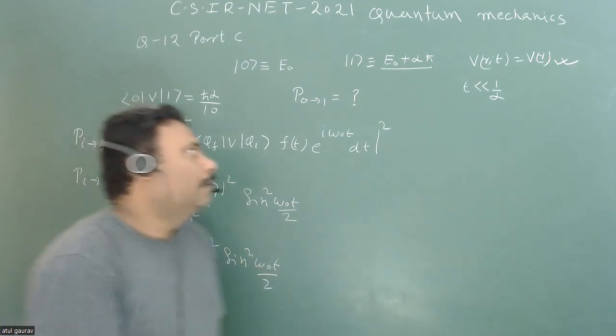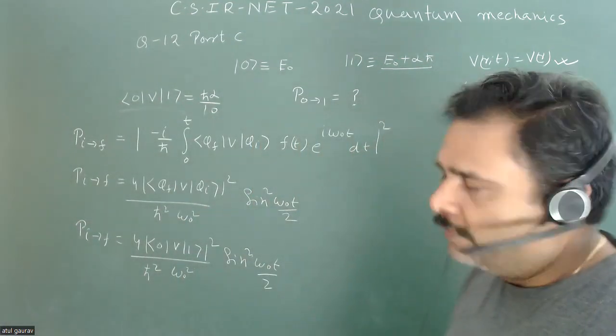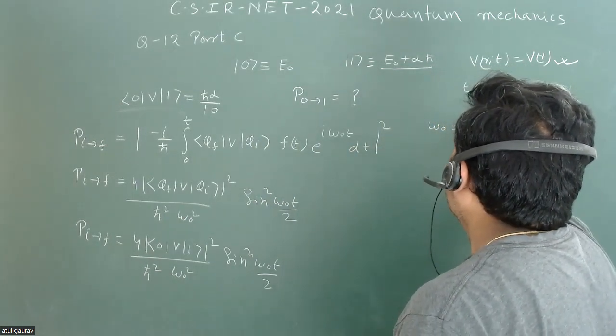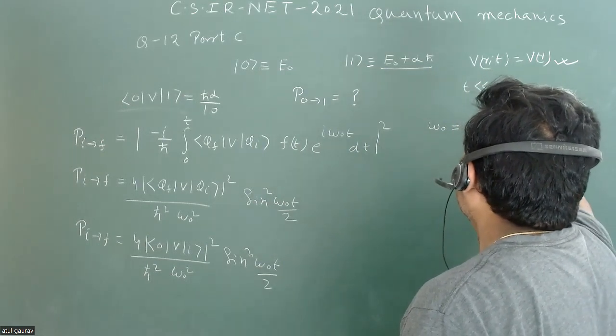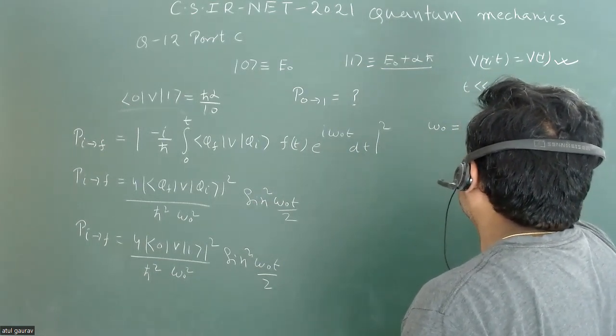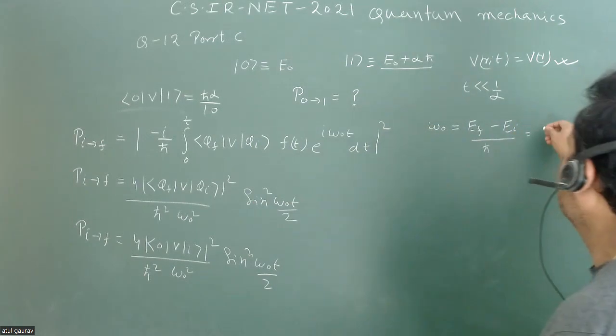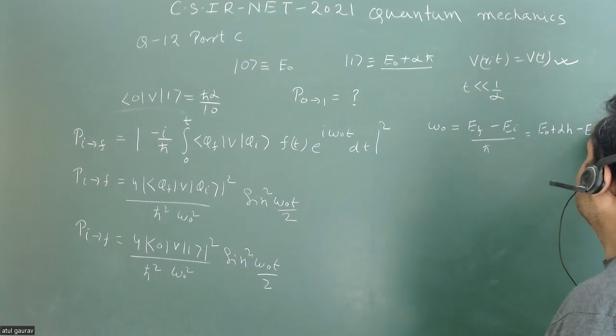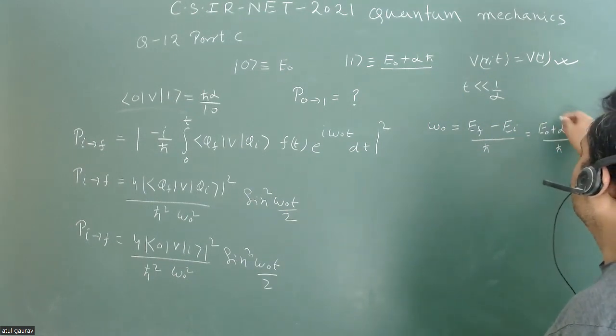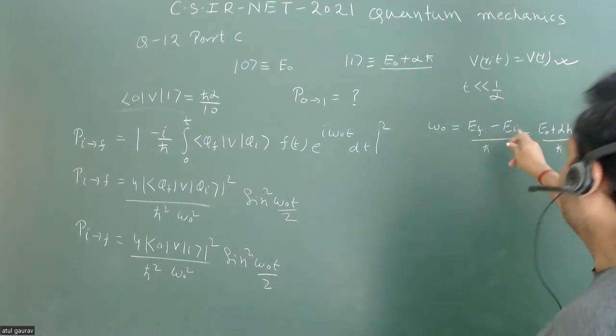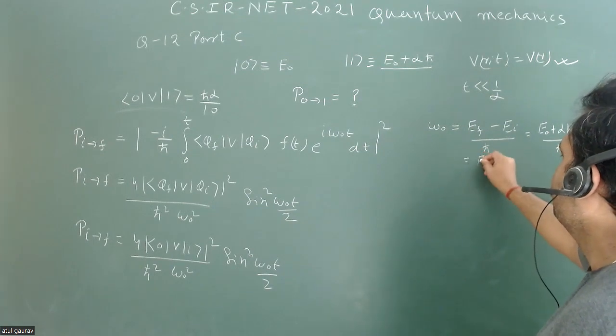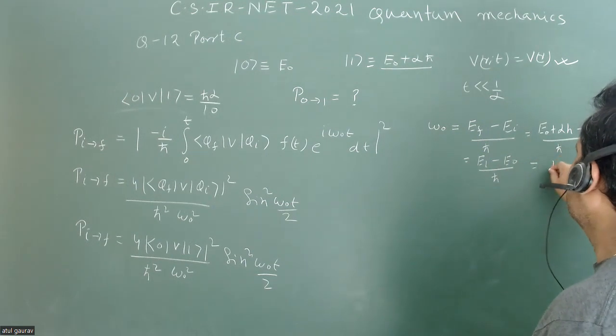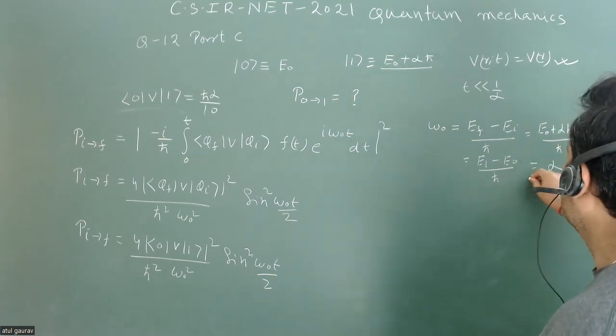Now we have to calculate the value of ω₀. The ω₀ is (E_f - E_i)/ℏ. Here we have this value is (E₀ + αℏ - E₀)/ℏ. This can be written as (E₁ - E₀)/ℏ, so this value is equal to α.